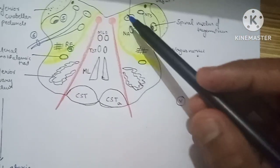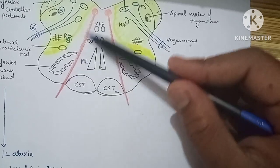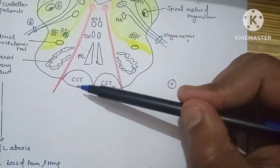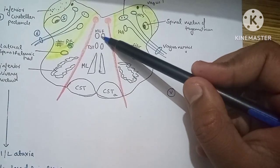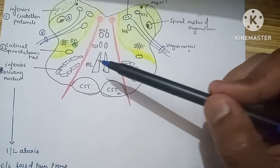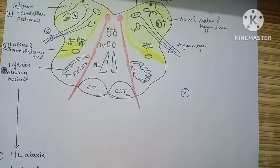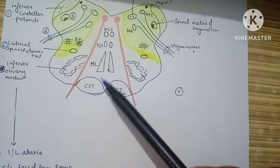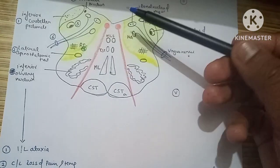Now for the medial medullary syndrome, which is easier. The key structures here are the hypoglossal nucleus and the hypoglossal nerve emerging lateral to the arcuate nucleus, the medial longitudinal fasciculus, the tectospinal tract, the medial lemniscus (the continuation of posterior column fibers above the nucleus gracilis and cuneatus), and the corticospinal tract (the pyramid).